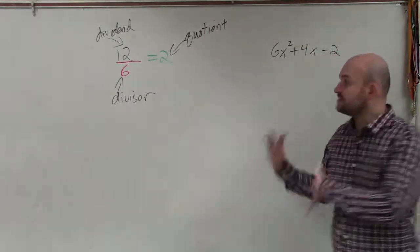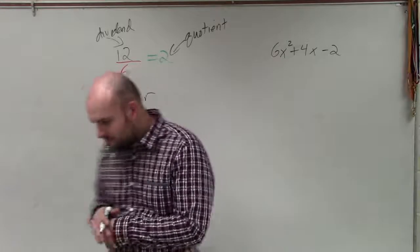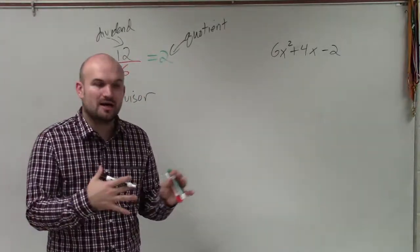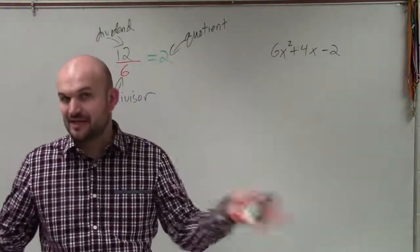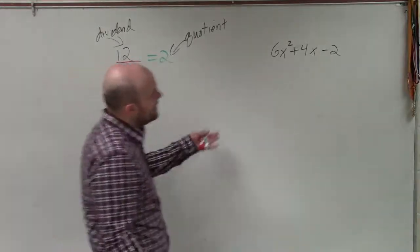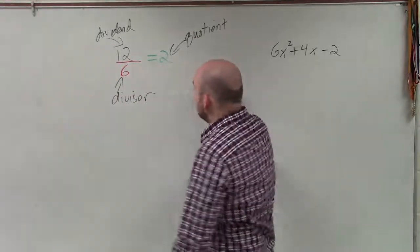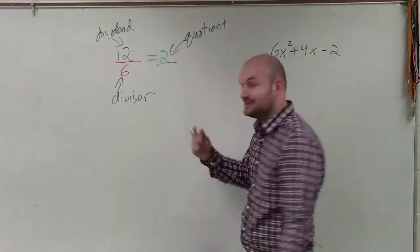When we have our dividend, divisor, and quotient, that's what makes up our division problem. When we're looking at a polynomial, the quotient is basically the answer.